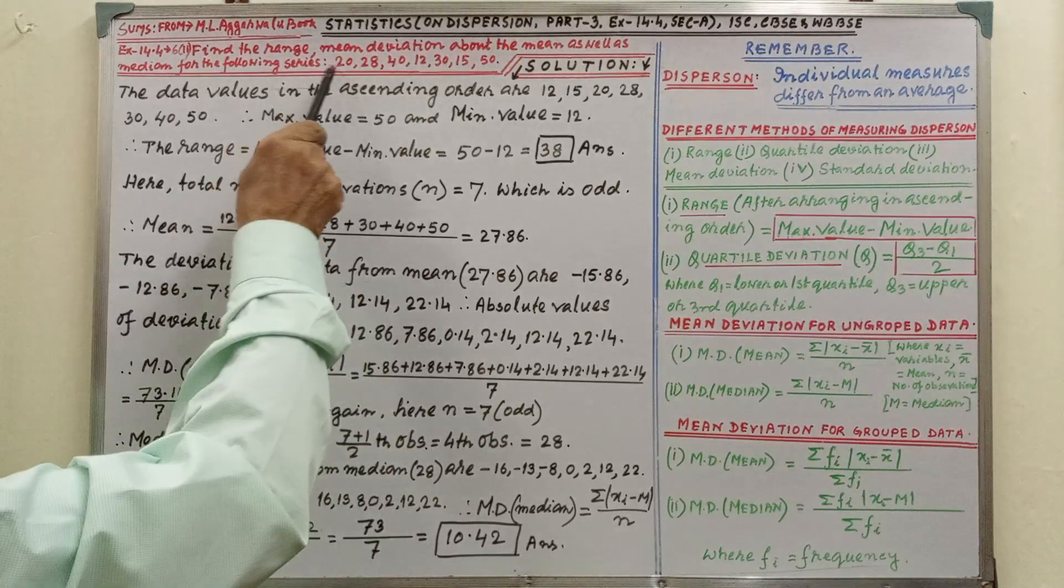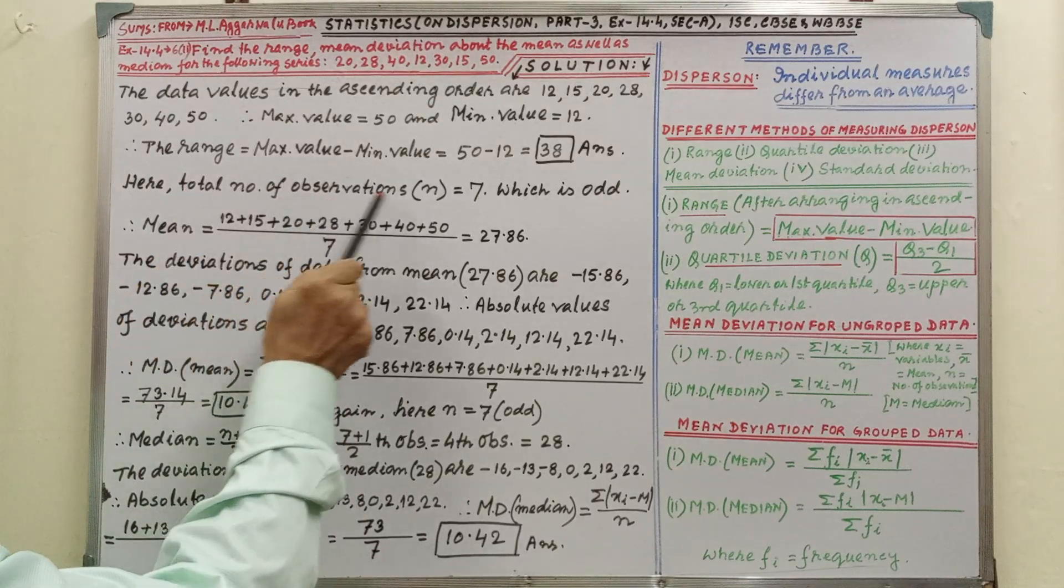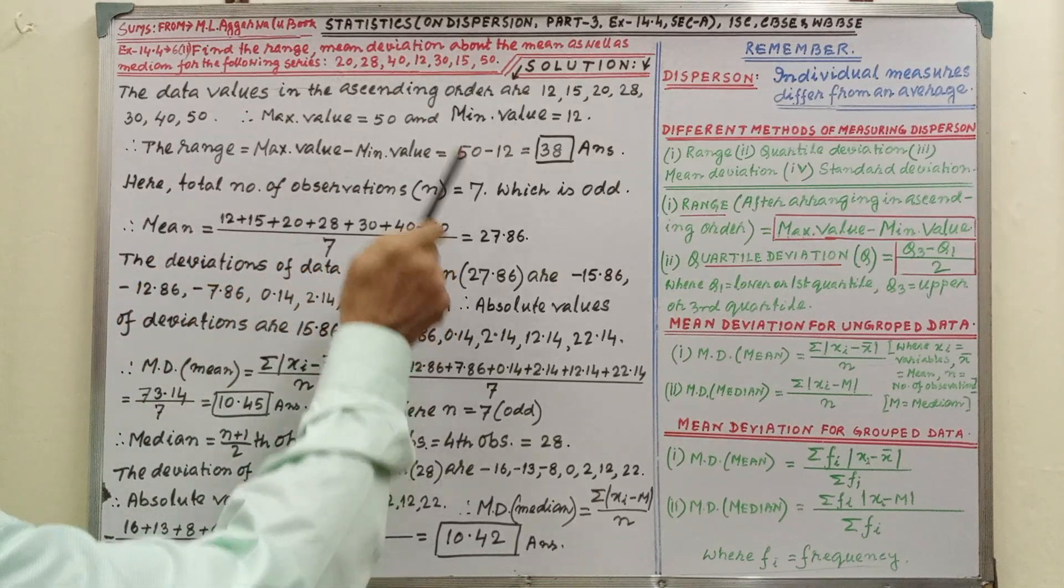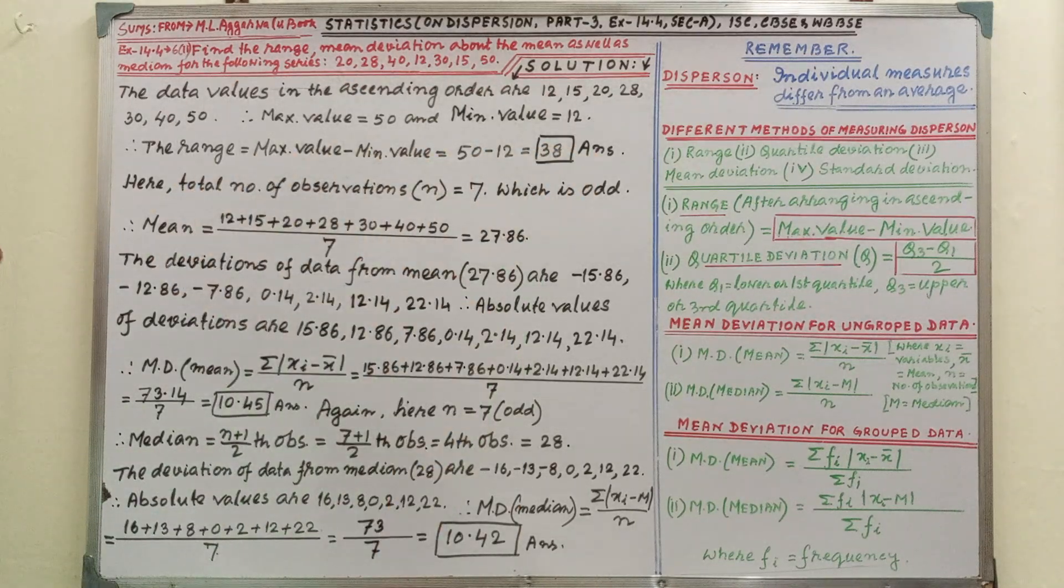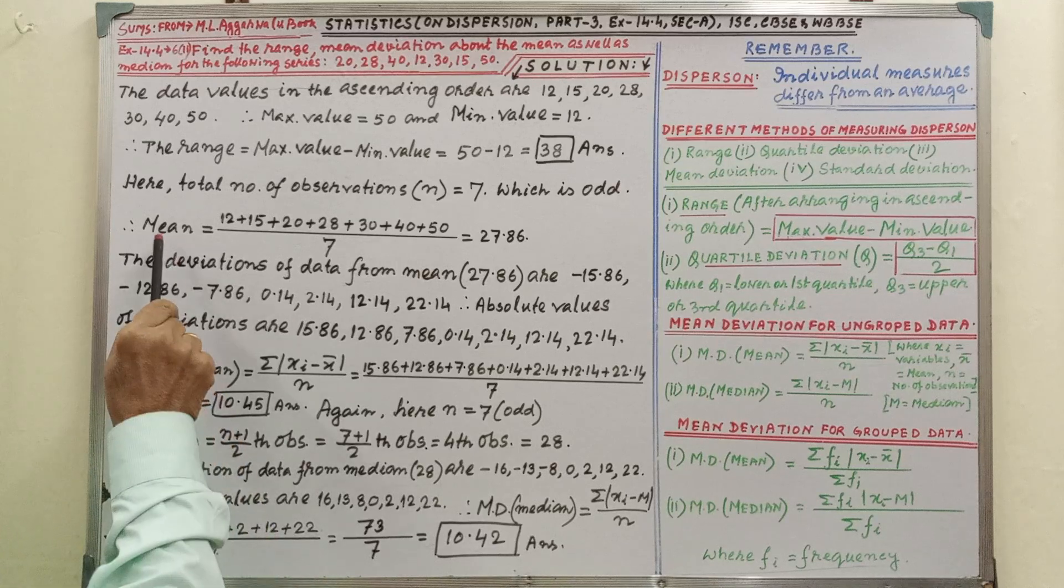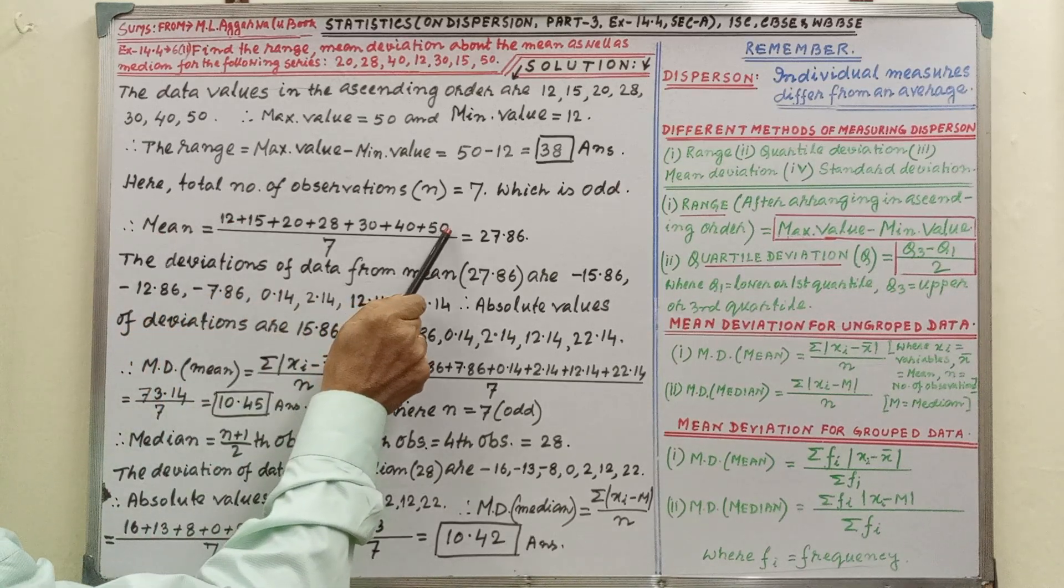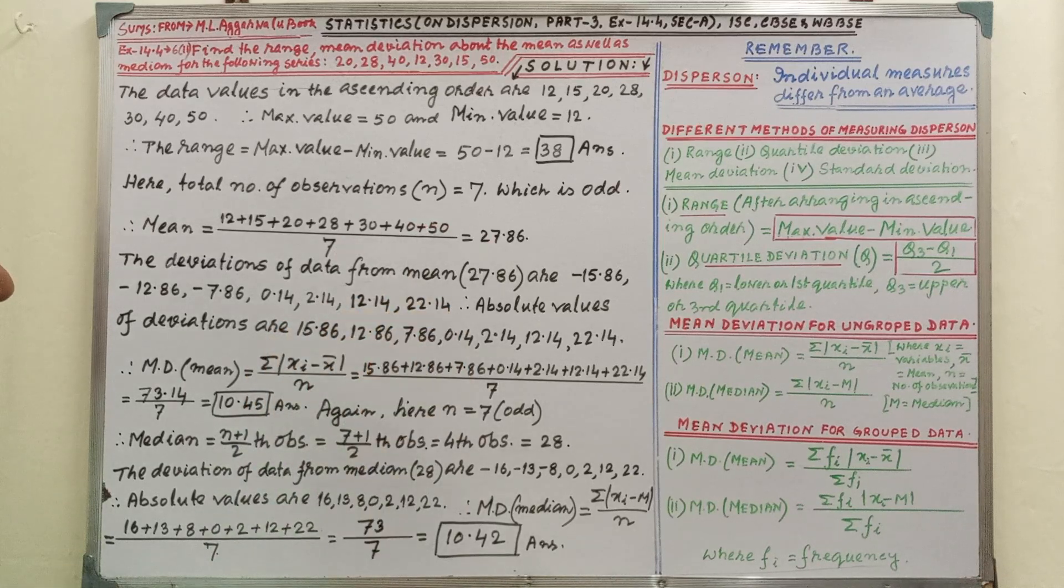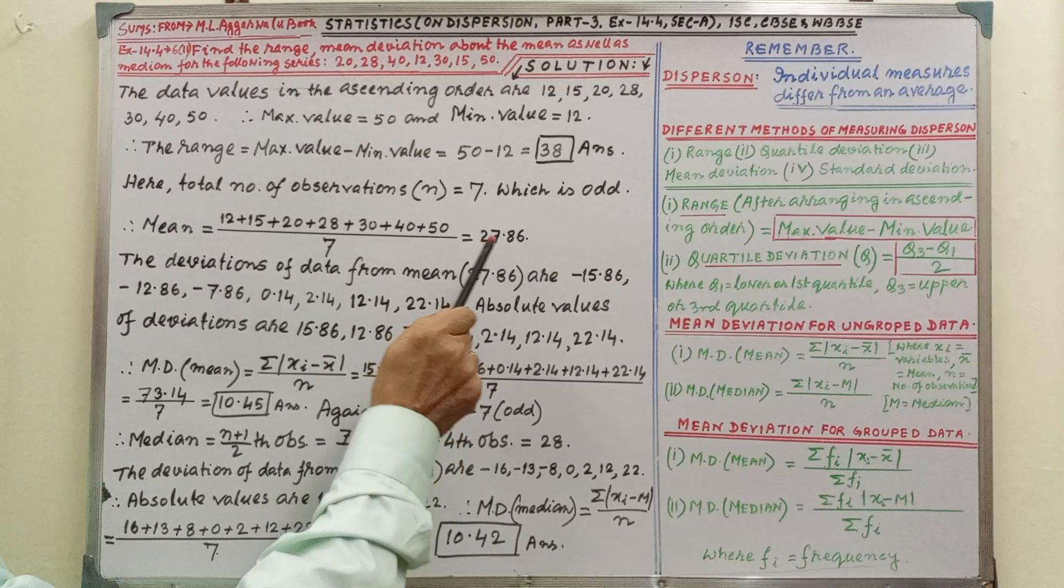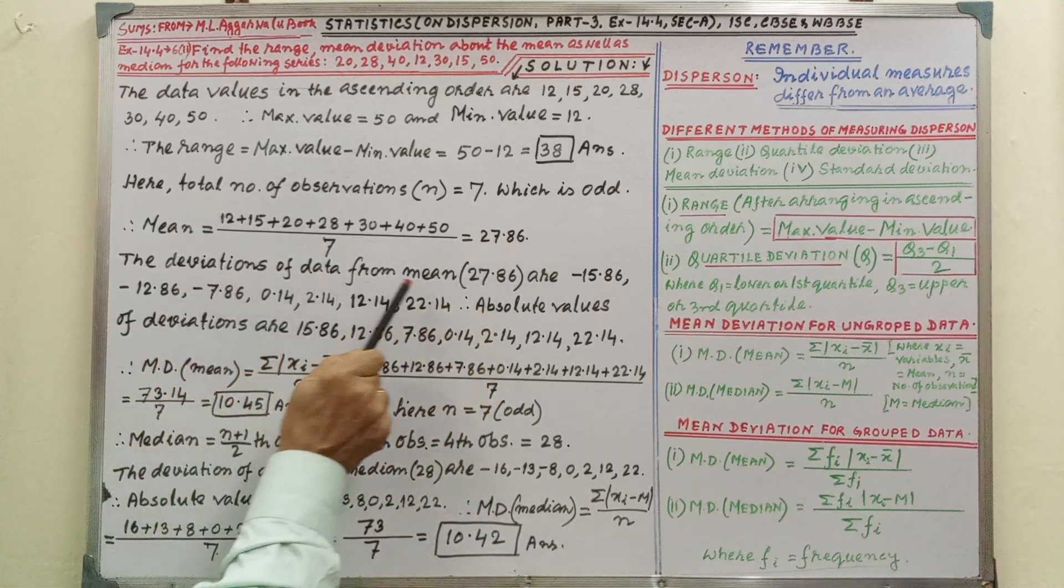Next we have to find out mean deviation. Here total number of observation that is n equal to 7. And mean equal to by adding the data by 7 by calculation it is coming 27.86. That is known to you very well. The deviations of data from the mean.